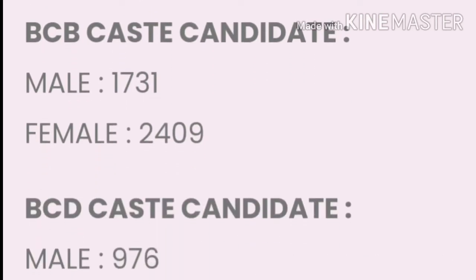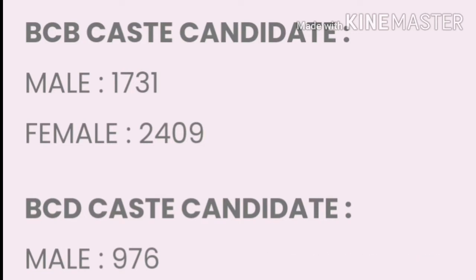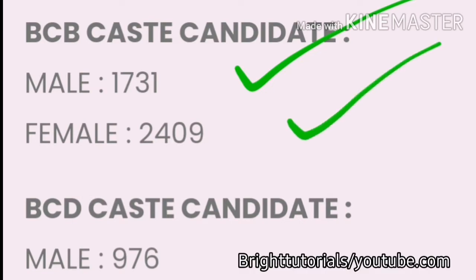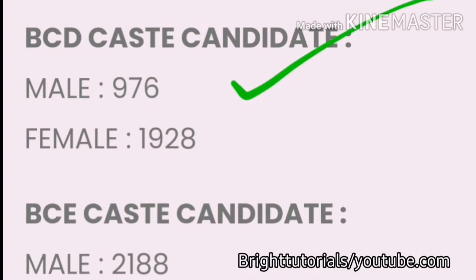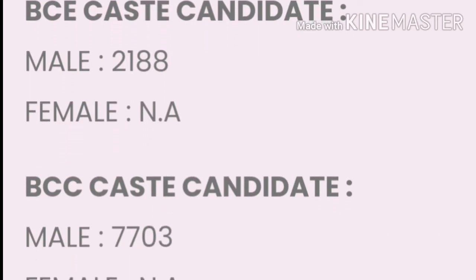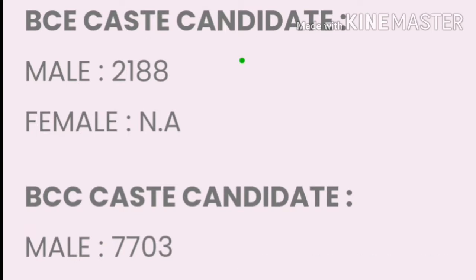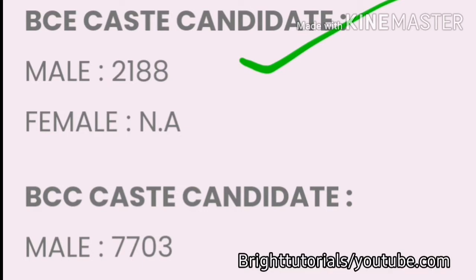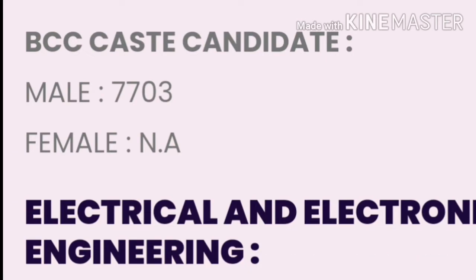Moving towards BCB caste: male cutoff is 1731 and female cutoff is 249. For the next BCB caste entry: male cutoff is 976 and female cutoff is 1928. For BCC caste: male cutoff is 7703.